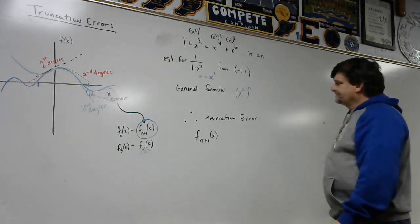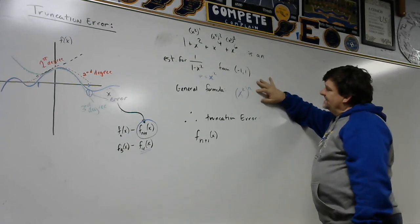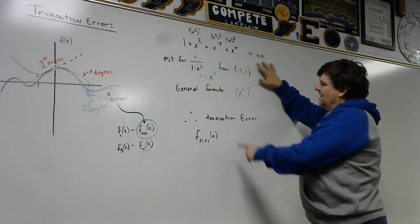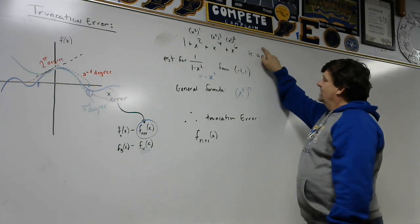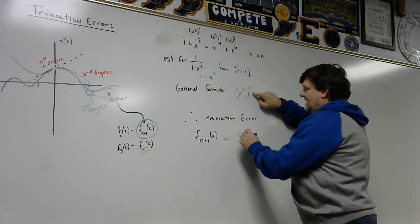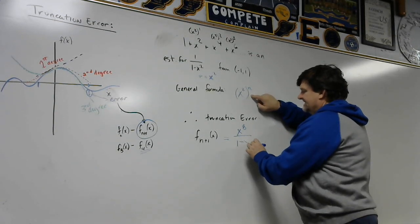So if we look at that piece, and this is the third one, our truncation error is going to be the next term which will be the fourth term. So this is going to be x to the eighth over one minus x squared.